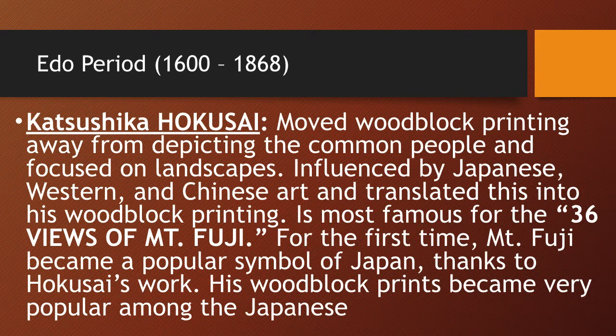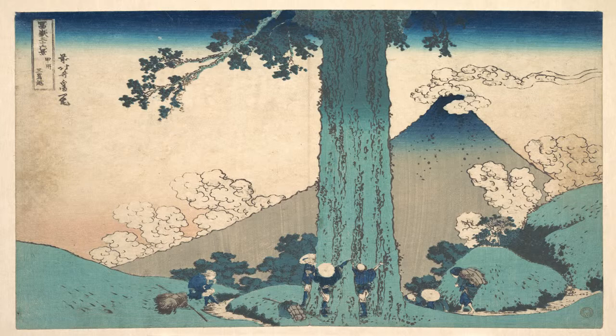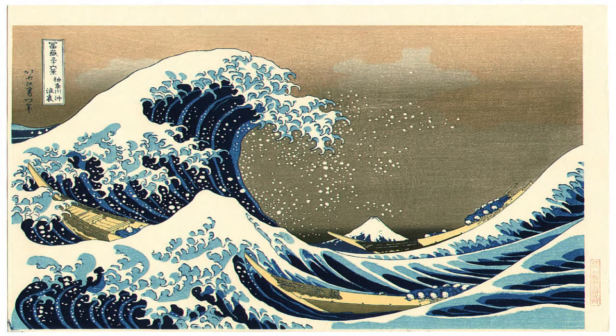He's most famous for the 36 Views of Mount Fuji. For the first time, thanks to Hokusai, Mount Fuji becomes a symbol of Japan. Until then it really wasn't this big symbol, but thanks to Hokusai's woodblock printing, Mount Fuji becomes representative of the Japanese islands, and his woodblock prints become very popular among the Japanese. Every single woodblock print he has includes Mount Fuji somewhere in the view, each from a different perspective.